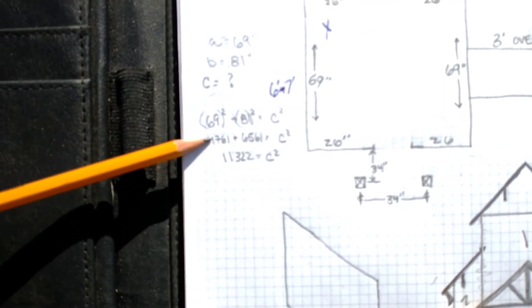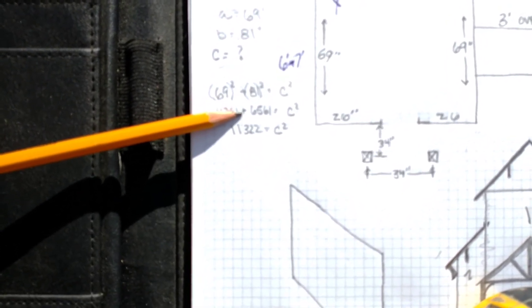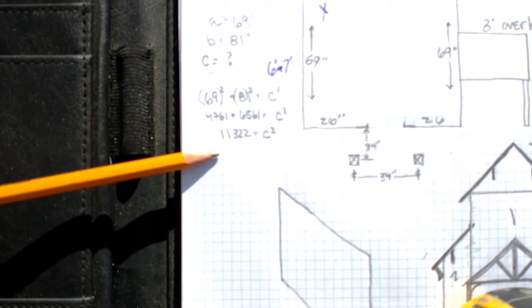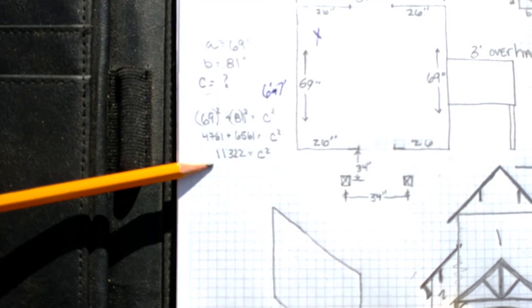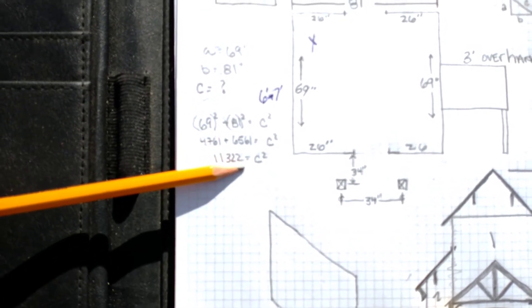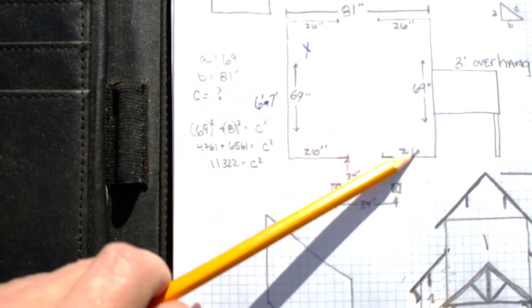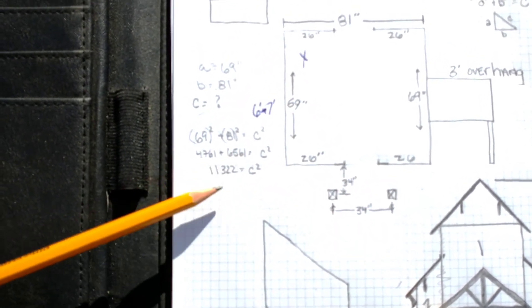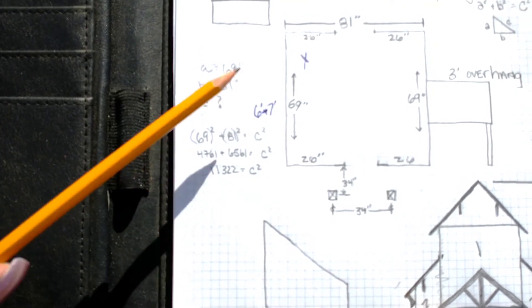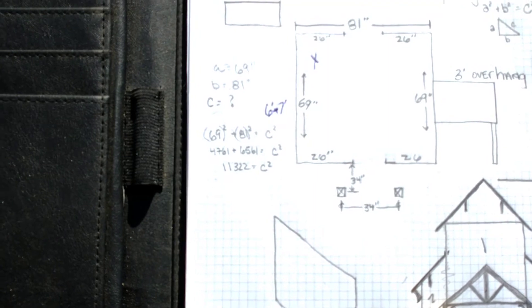Okay, so we added 4,761 inches plus 6,561 inches, which then comes to 11,322 inches is what C squared is. That sounds like a big number, but in order to find C, which is your hypotenuse, you then just take the square root of this number and you will get the perfect length in inches for C. So let's do that.